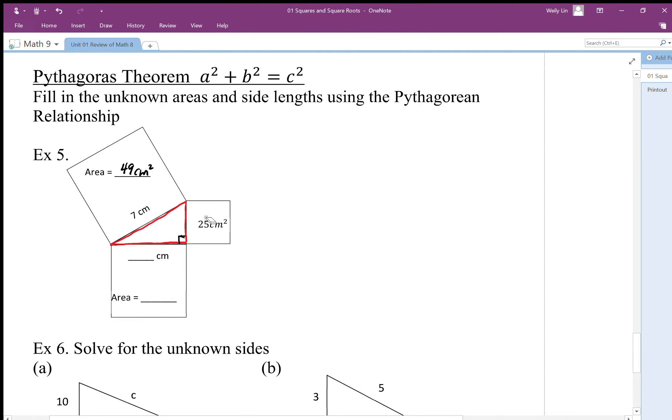So a squared plus b squared equals c squared. So if I take away 25 centimeters squared from the 49, I end up with 24 centimeters squared. And from the 24 centimeters squared, I can find the side length of square root 24.